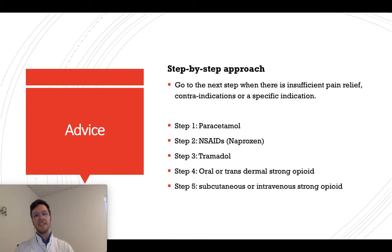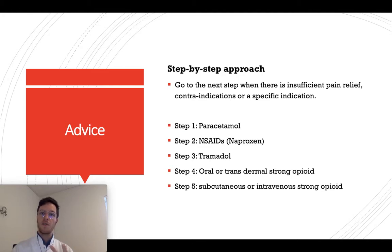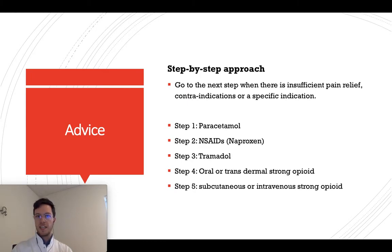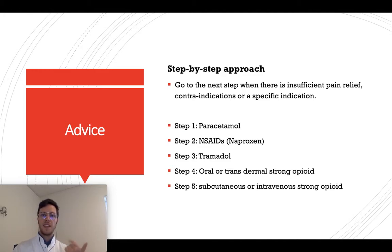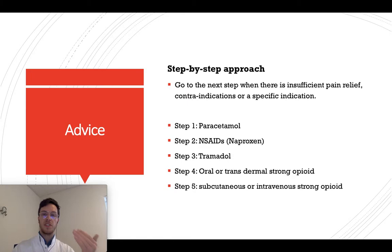If you want to use a painkiller, always use a step-by-step approach. Go to the next step when there is insufficient pain relief or contraindications. Step 1 is paracetamol — it's safe, effective, has fewer side effects, and is cheap. If insufficient, step 2 is an NSAID like diclofenac, ibuprofen, or naproxen, combined with step 1. Step 3 is weak opioids, such as tramadol, combined with steps 1 or 2.